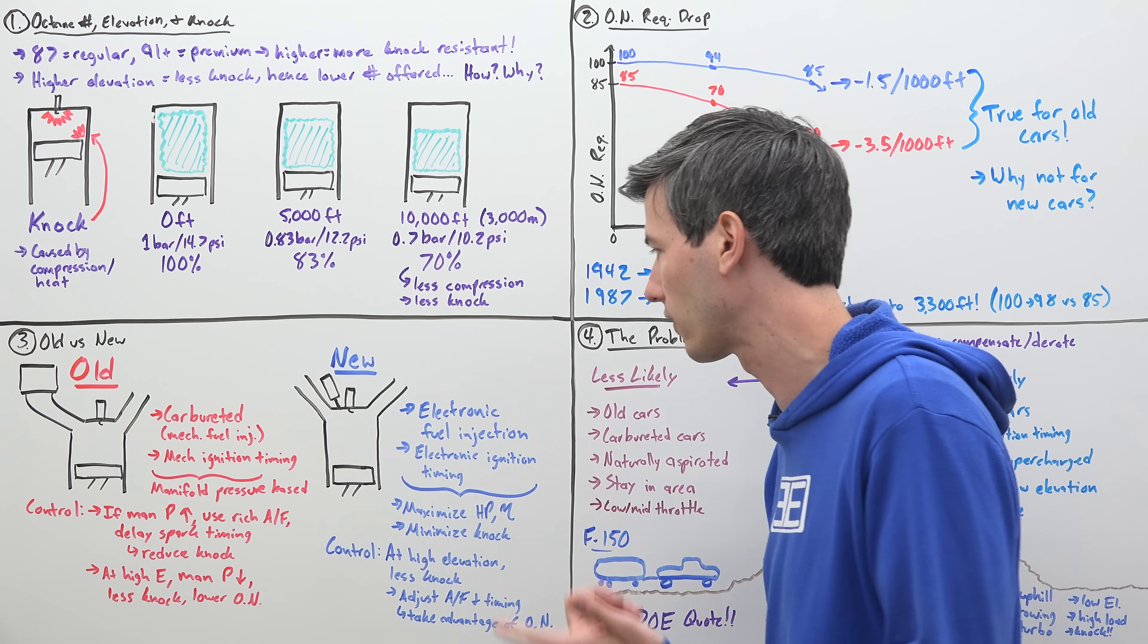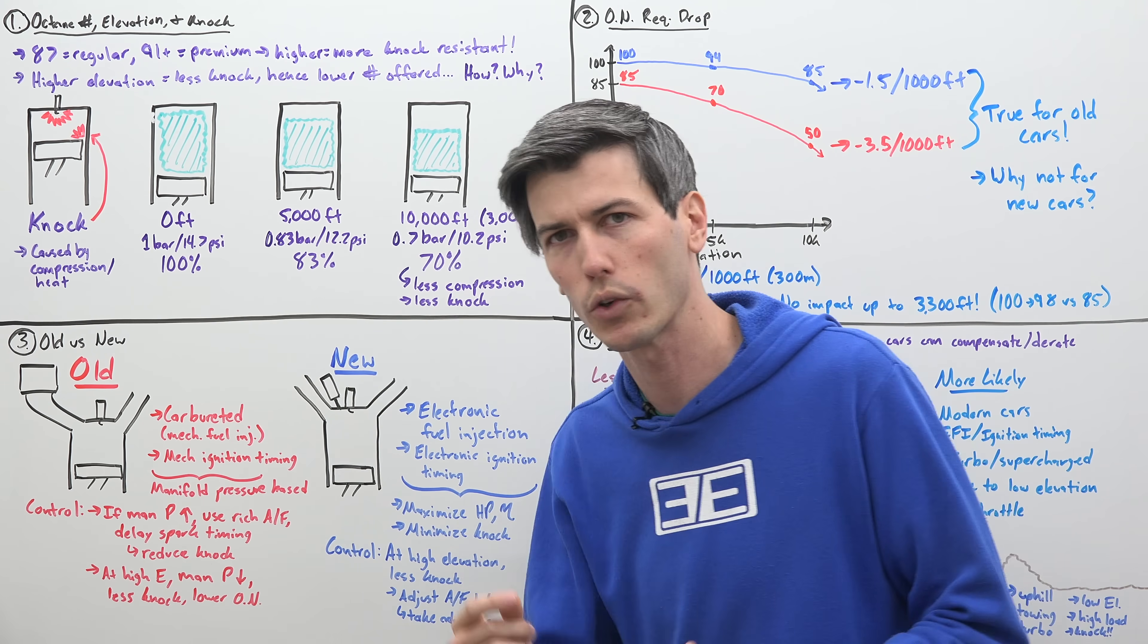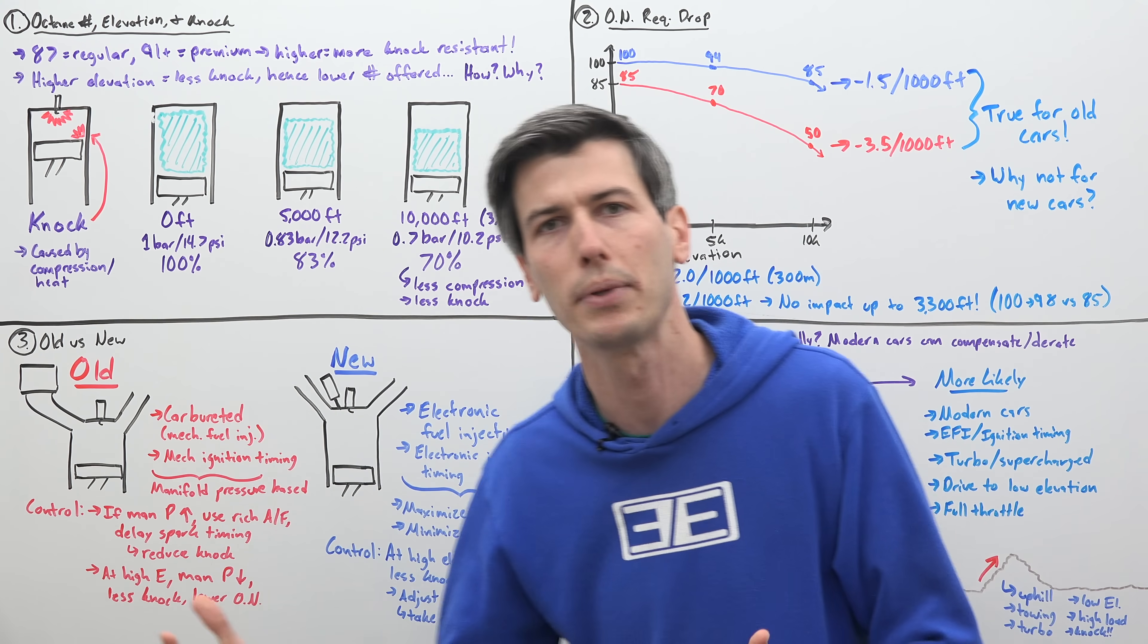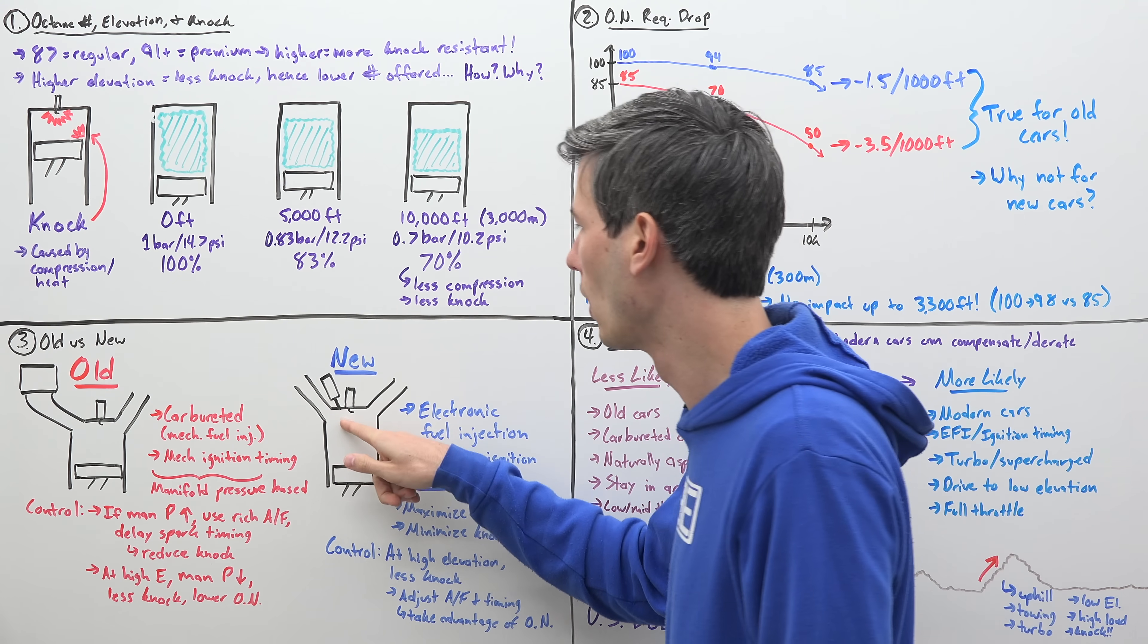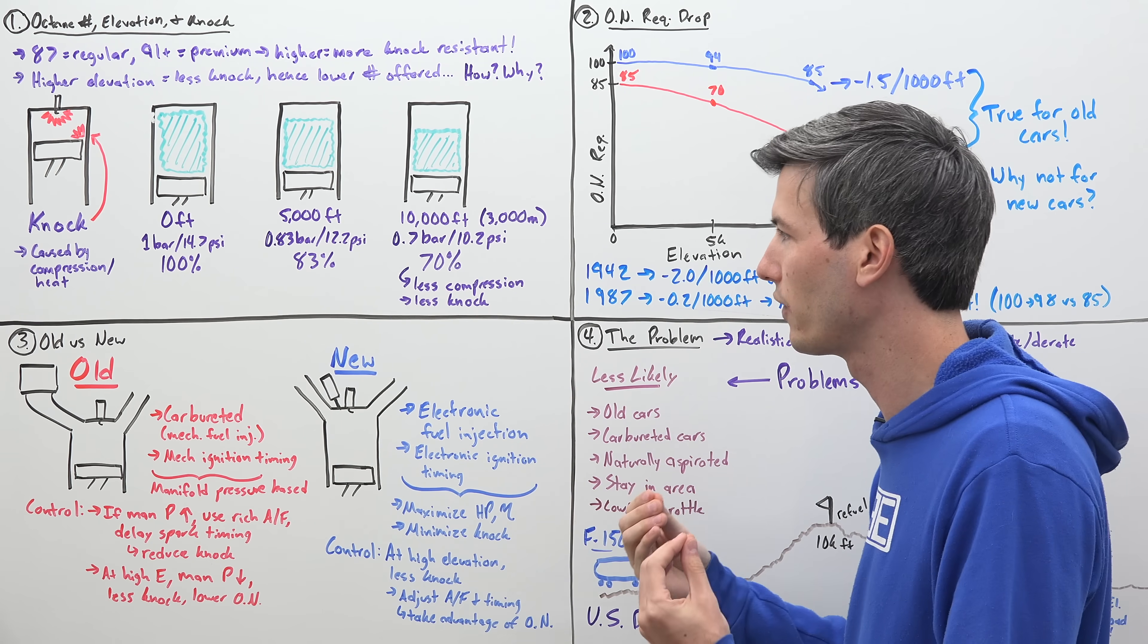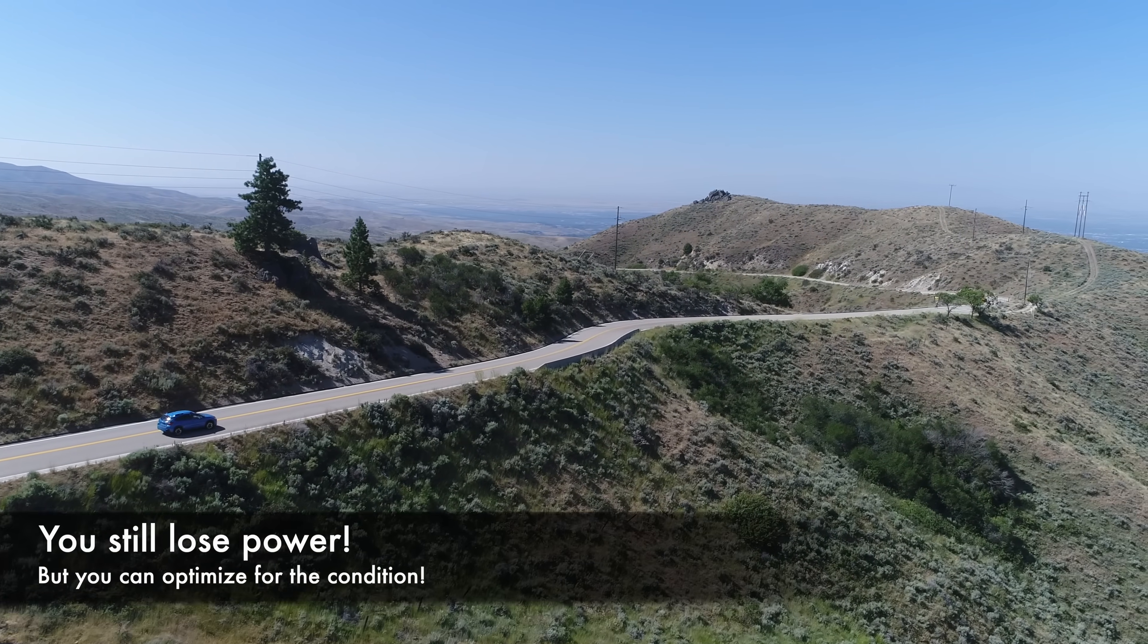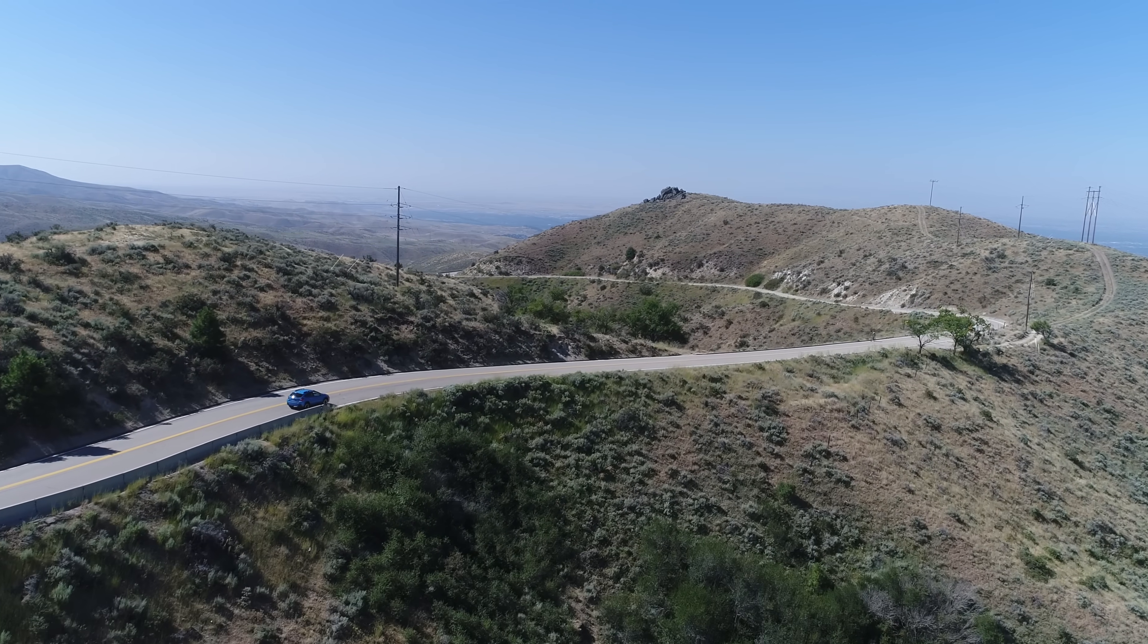New engines can compensate for this because they have electronic fuel injection and electronic ignition timing. You can maximize horsepower, you can maximize efficiency, and you can minimize knock by playing with your exact air fuel ratio and by playing with your ignition timing, regardless of what RPM you're at, regardless of whether you're at full load or low load. You have complete control over that ignition timing and your air fuel ratio, so you can optimize these variables. Even when you're driving at a really high elevation, you can use things like timing advance to help minimize that impact of elevation on your performance. You can still maximize output and efficiency by playing with these fuel and ignition timing variables.